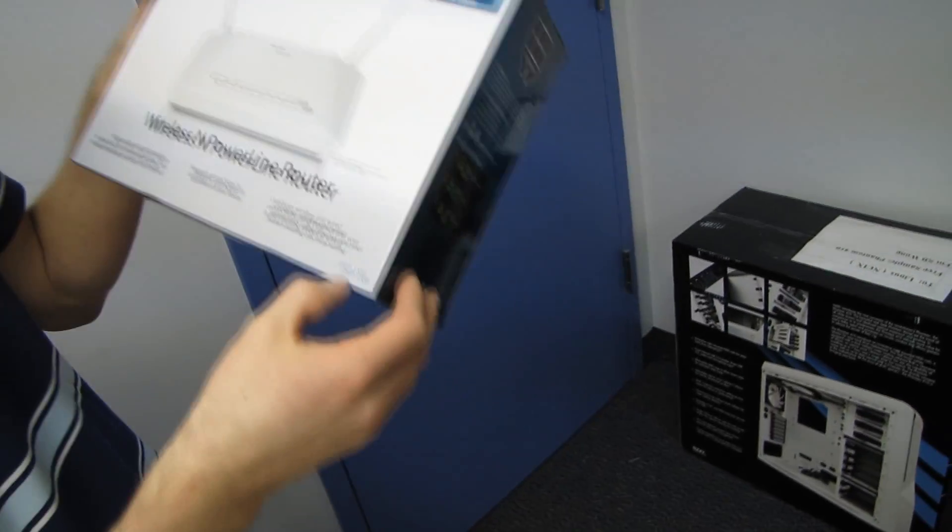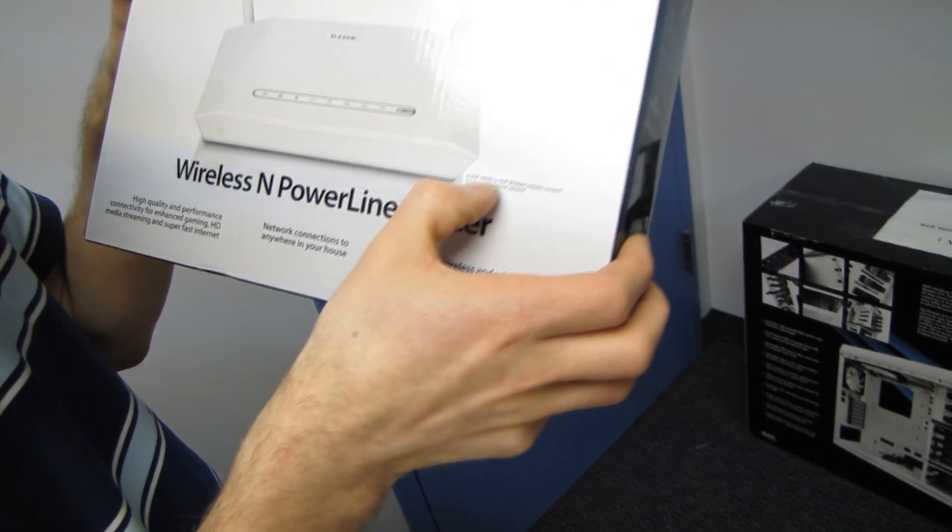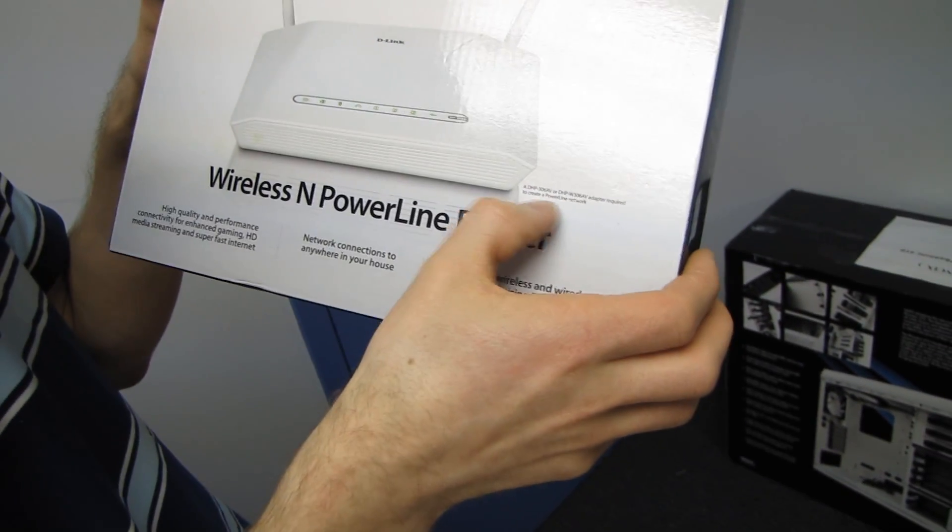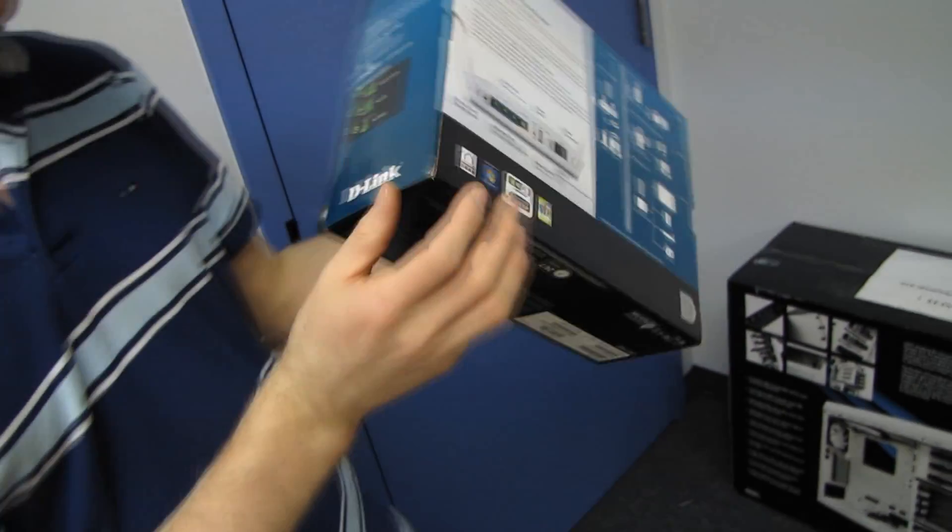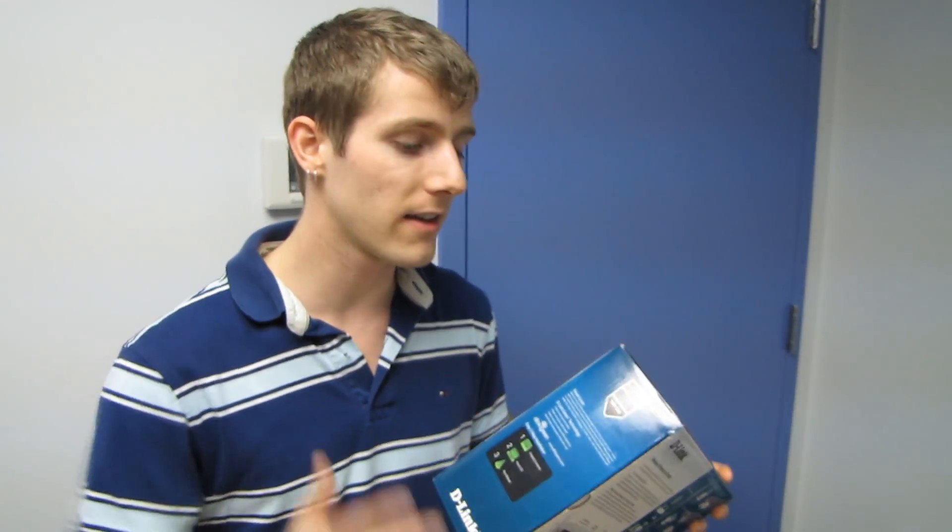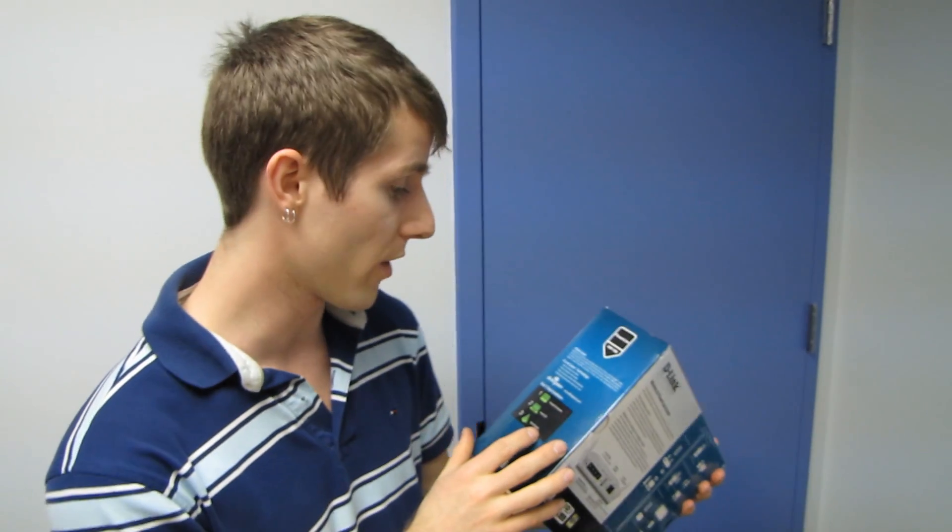This is the DHP-1320 and it's got a little note here. A DHP-306AV or W306AV adapter is required to create a power line network, but the one that I'm going to be demoing when I do my NCIX tech tips is going to be from a completely different brand, just to emphasize that as long as the device complies to this standard, it is going to work.